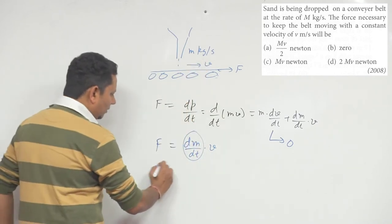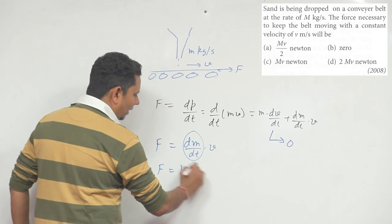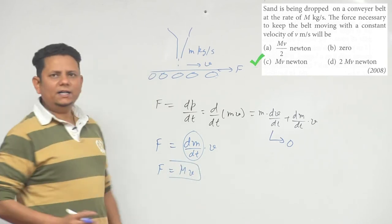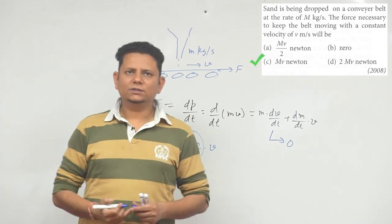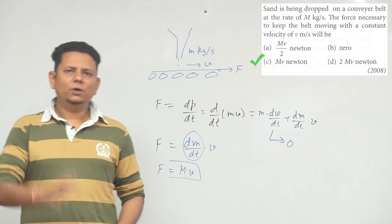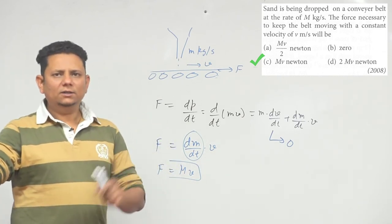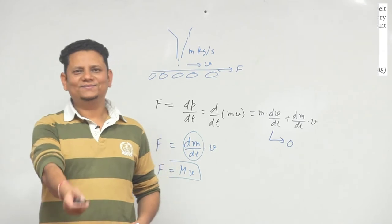So your final answer becomes: this will be equal to Mv. So the force required to move the belt at constant velocity will be option C: M multiplied by v newtons. So C would be the right answer.